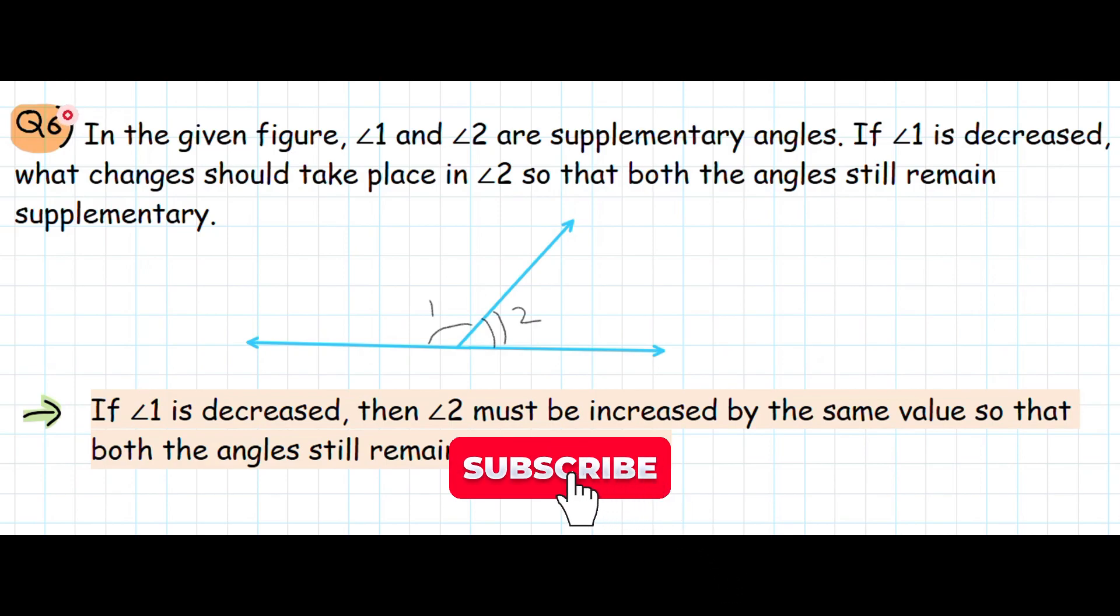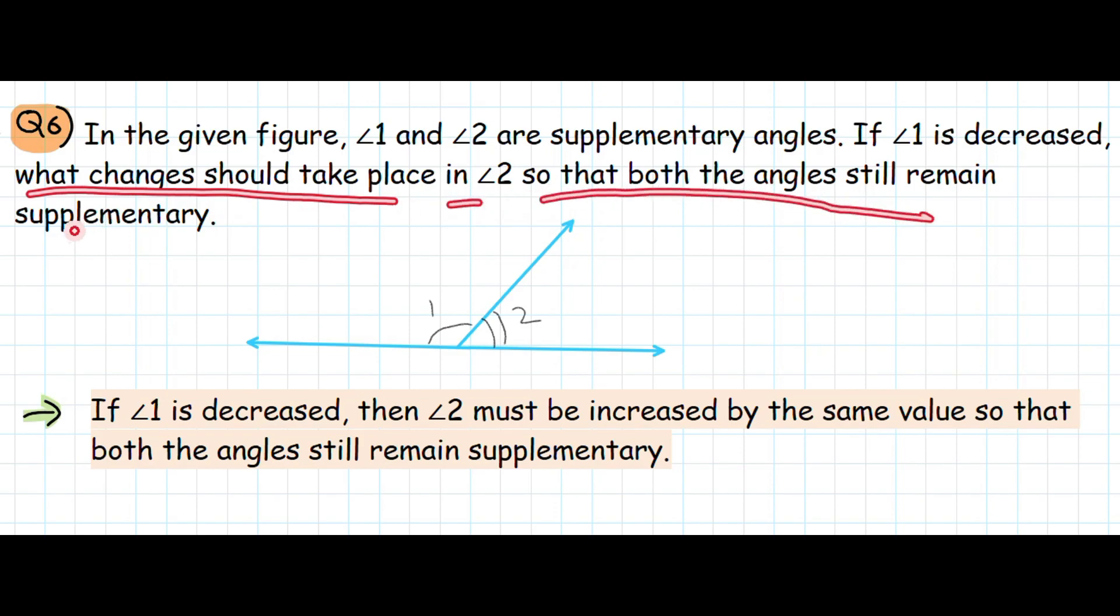Hello guys, in this video we will see Exercise 5.1, question number 6. In the given figure, angle 1 and angle 2 are supplementary angles. If angle 1 is decreased, what changes should take place in angle 2 so that both the angles still remain supplementary?